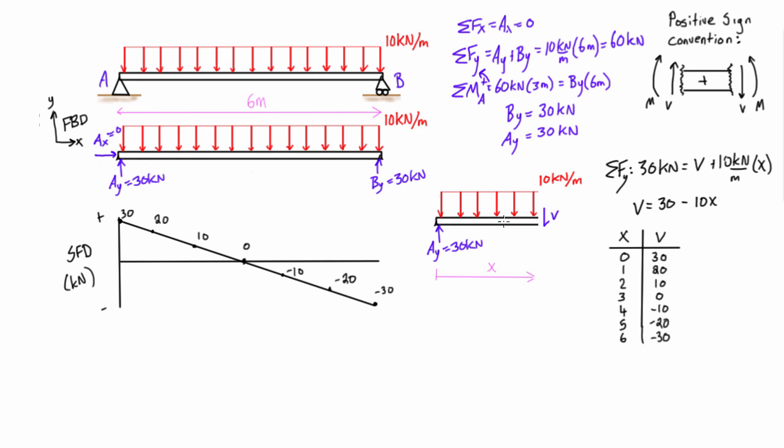Imagine we had shrunk down X to be zero. Well we would have basically no distributed force and then if we took a cut just to the right of this support we'd have 30 kilonewtons pushing up and we'd have to have that 30 kilonewtons internal shear force pressing back down to cancel that out and that would be in the positive sense. So we're starting at 30.